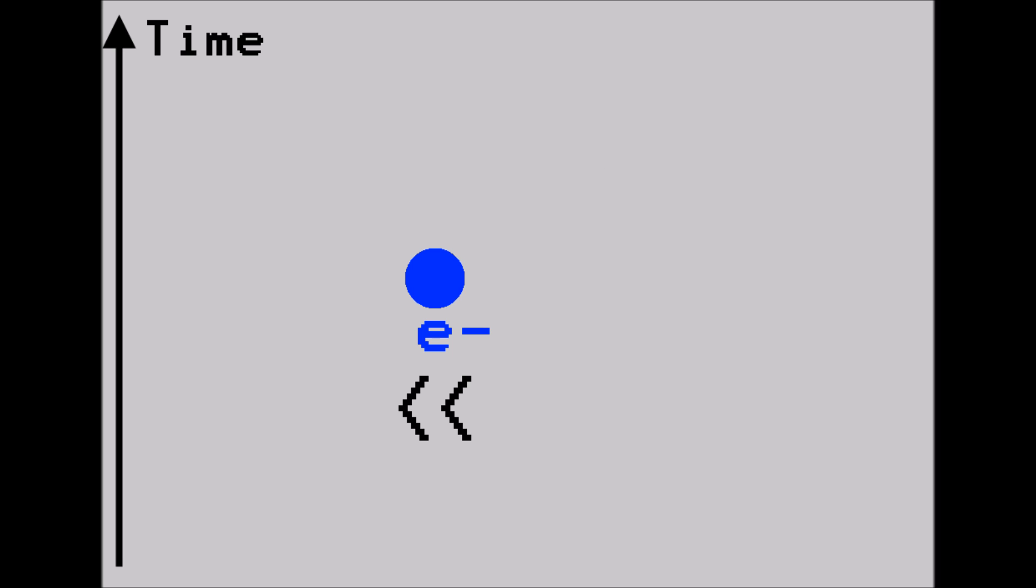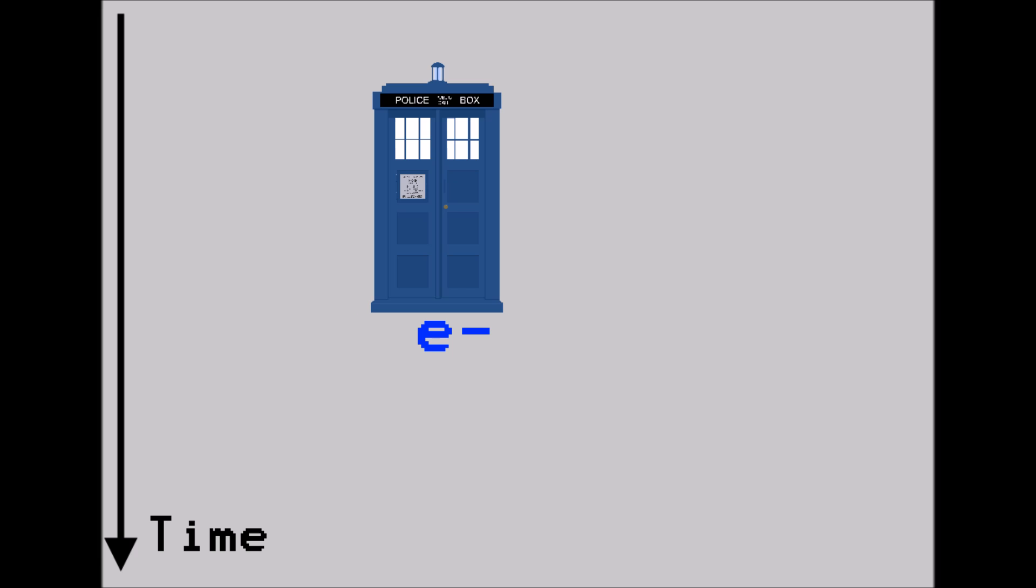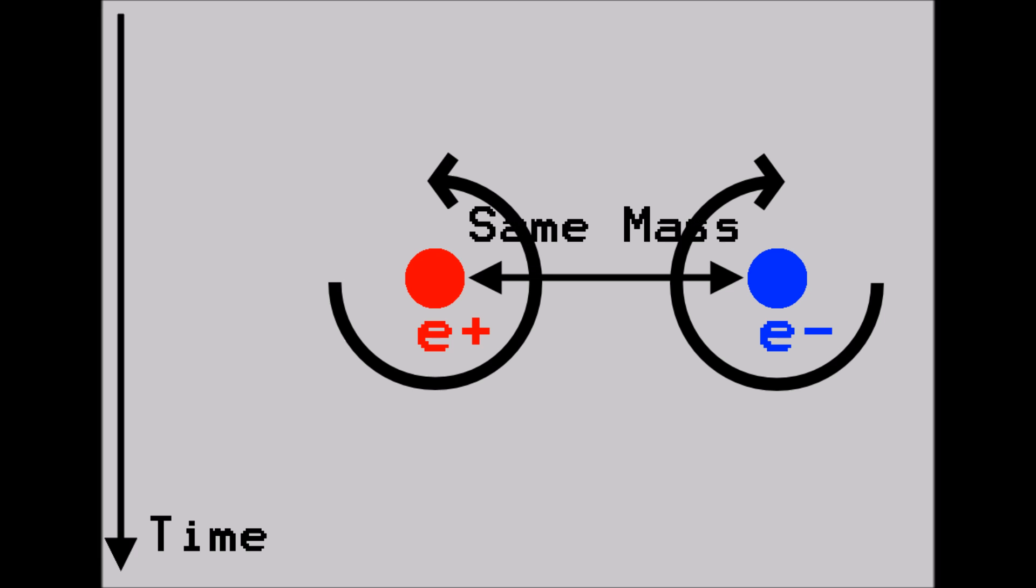Suppose now we play the video in reverse, with the electron travelling backwards through time. Now it will accelerate towards negative charge, accelerate away from positive charge, and spin in an anti-clockwise direction. In other words, this time travelling electron will appear to us to be positively charged, with the same mass as the electron, but with its spin and most of its other quantum properties reversed.